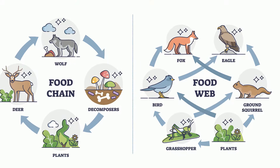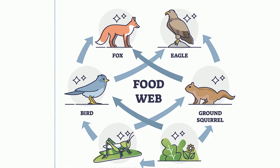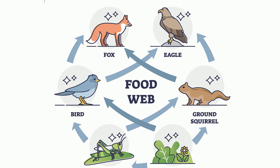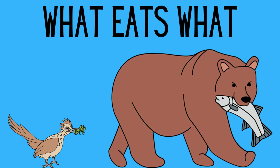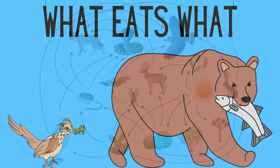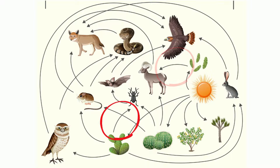A diagram that sets out an intricate network of intersecting and overlapping food chains for an ecosystem is called a food web. It is basically a visual picture of what eats what in an ecosystem. The arrows always point in the direction that the energy is being transferred.